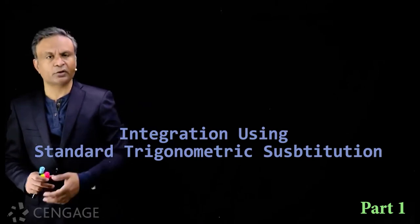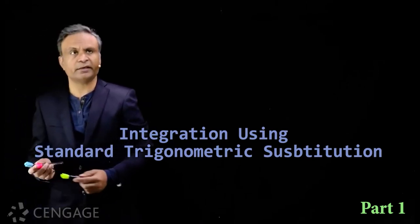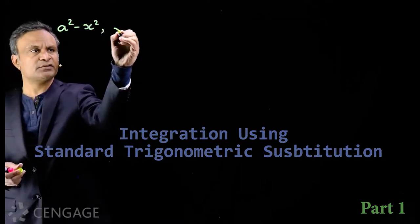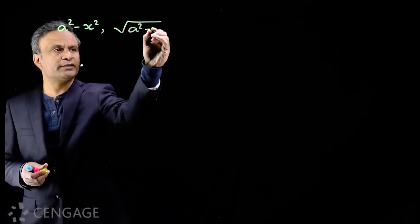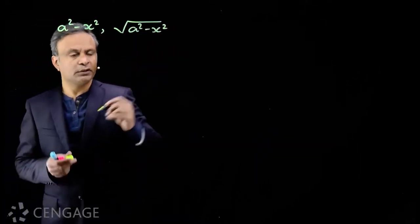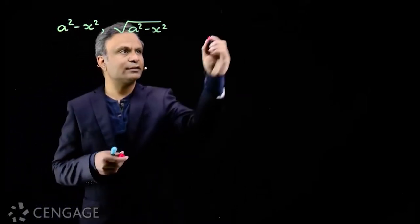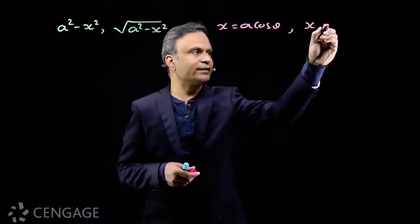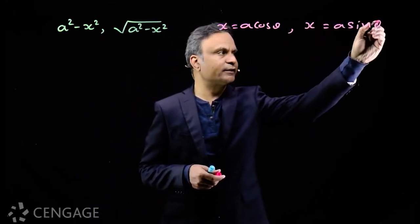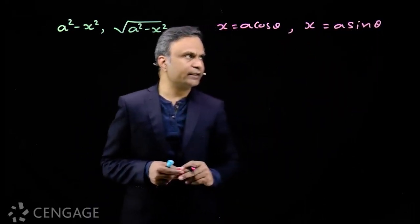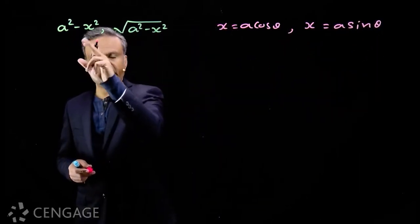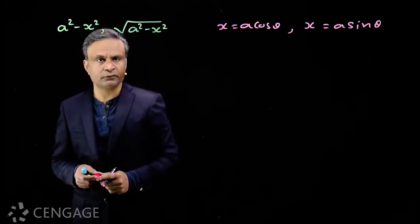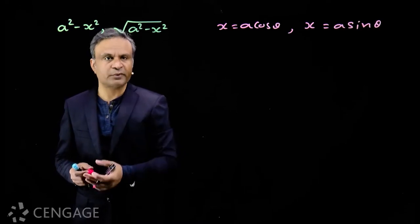We have some standard trigonometric substitutions. If we have an expression like a² - x² or √(a² - x²), we put x = a cosθ or x = a sinθ. If we put x = a sinθ, we get a² - a² sin²θ, which is a² cos²θ. We get a meaningful expression.